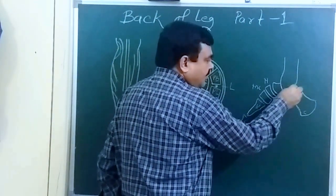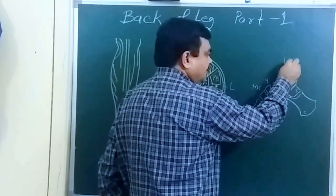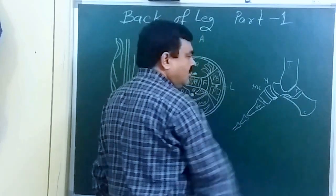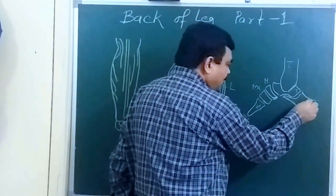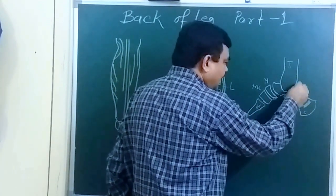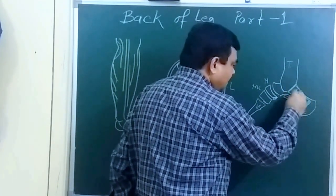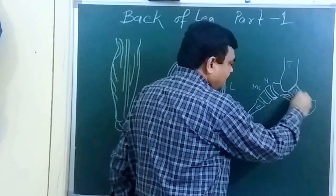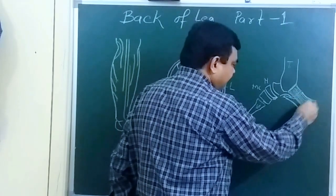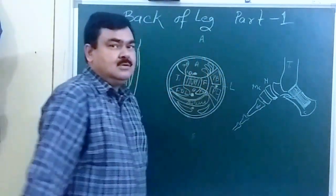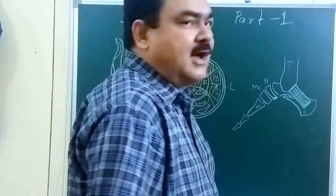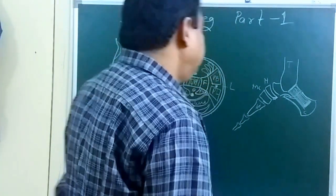This is the tibia — the posterior border of the medial malleolus. Here is a tubercle; this is the tubercle of the calcaneum. From the posterior border of the medial malleolus to the tubercle of the calcaneum, a fibrous septa is present, and this is known as the flexor retinaculum.